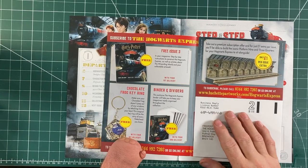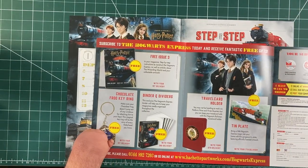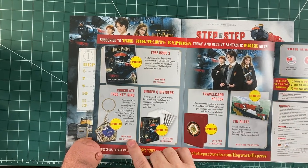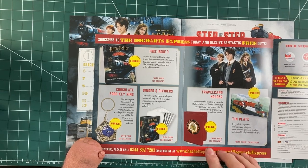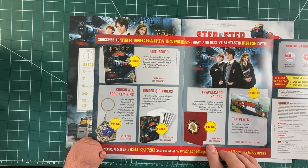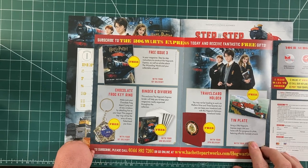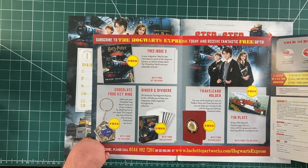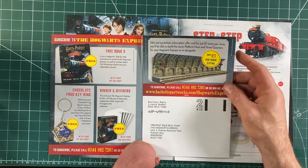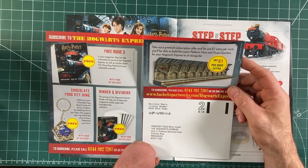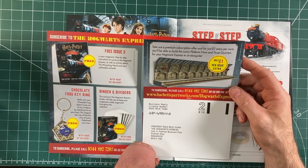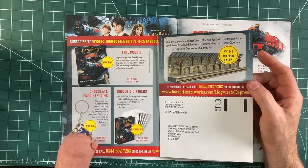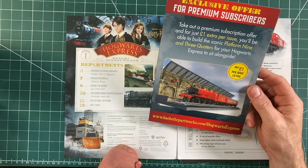Let's reserve my copy. And then let's have a look at all the free gifts you get if you subscribe. Chocolate frog keyring, binders and dividers, travel card holder, free tin plate. And if you take out the premium subscription, you'll be able to build the iconic platform nine and three quarters. And your Hogwarts Express will sit alongside that. I think that's worth going for if you're going to subscribe.